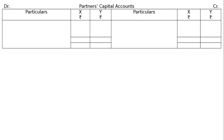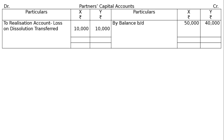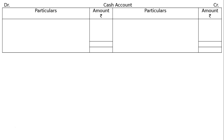Prepare the capital accounts of X and Y. By balance brought down: X rupees 50,000, Y rupees 40,000. Then debit to realization account — loss on realization transferred: rupees 10,000 for X and rupees 10,000 for Y. Total the credit side — rupees 50,000 and rupees 40,000 — take it to the debit side and find out the gap. To cash account: for X rupees 40,000, for Y rupees 30,000.